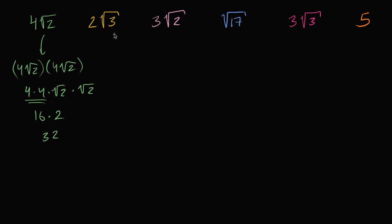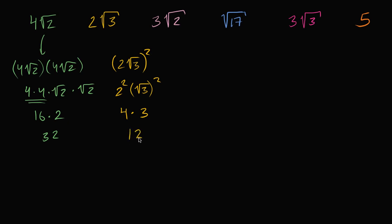Now what about two square roots of three? Same idea — let's square it. If we square two square roots of three, this is going to be two squared times the square root of three squared. Two squared is four, and square root of three squared is three. So this equals 12. If this step seems confusing: if you have the product of two things raised to a power, that's the same as raising each of them to that power and then taking the product. You can see why that makes sense — changing the order of multiplication gives you four squared times the square root of two squared.